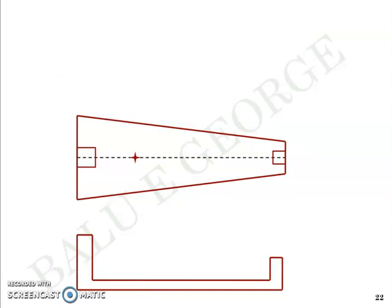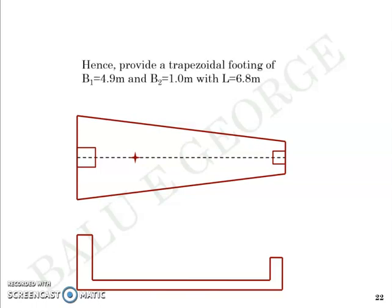Rounding off the figures, we provide a trapezoidal footing with b1 = 4.9 meters and b2 = 1 meter in breadth, with length limited to 6.8 meters. That completes the geotechnical design of a trapezoidal combined footing — one of the simplest examples that can be quoted.